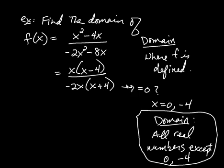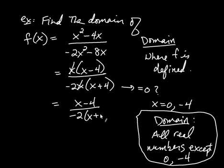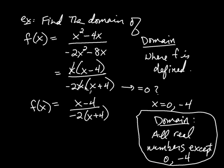Why exclude those? Because the domain is where the function is defined, and 0 and negative 4 cause the denominator to be 0 — that's where the fraction is undefined. You ask yourself when the fraction is undefined, and then you exclude those numbers. You can go further and simplify: the x's cancel, giving x minus 4 divided by negative 2 times x plus 4. But you can plug in whatever you want except 0 and negative 4. Always ask about the domain before canceling, because with rational expressions you may accidentally cancel an expression that would have caused the denominator to be 0.